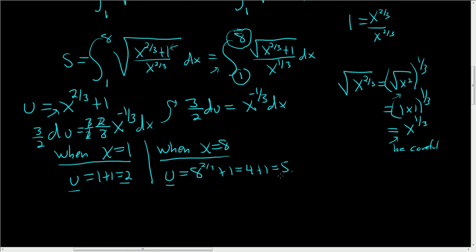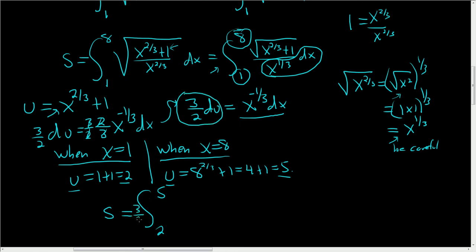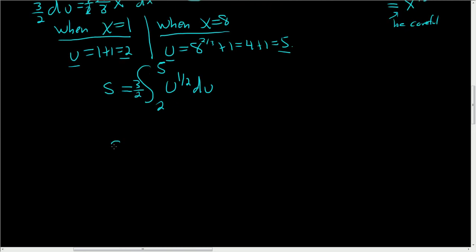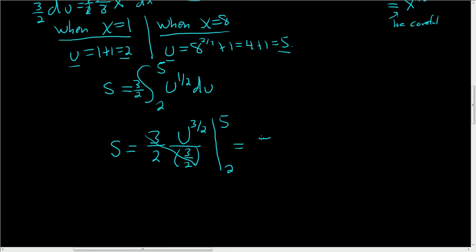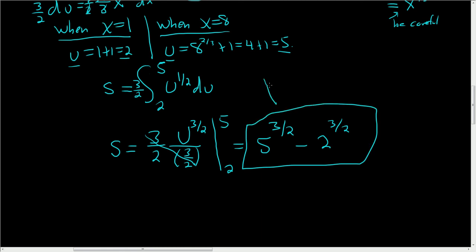So little s is the definite integral from 2 to 5, and substituting gives us 3/2 times the square root of u du. Pulling the 3/2 outside, we write the square root of u as u to the 1/2. Using the power rule, we add one to get u to the 3/2 divided by 3/2, integrated from 2 to 5. These cancel, so we plug in: 5 to the 3/2 minus 2 to the 3/2. That is the arc length, and we are done.